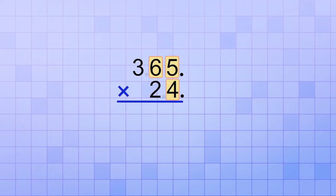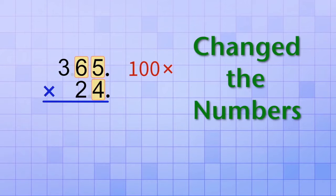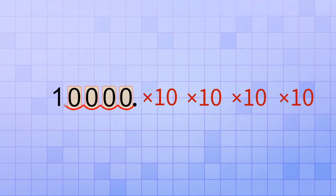But doing that changed the numbers. It made the top number 100 times bigger than the decimal version, and it made the bottom number 10 times bigger. That's because every time you shift the decimal point one number place to the right, it's like multiplying by a factor of 10.